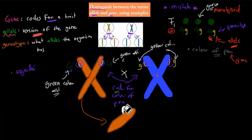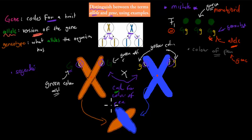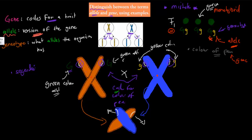Let's say this is the father, and then this part here from the mother. The gene itself codes for the actual colour, and this would give it the big G, the capital G.